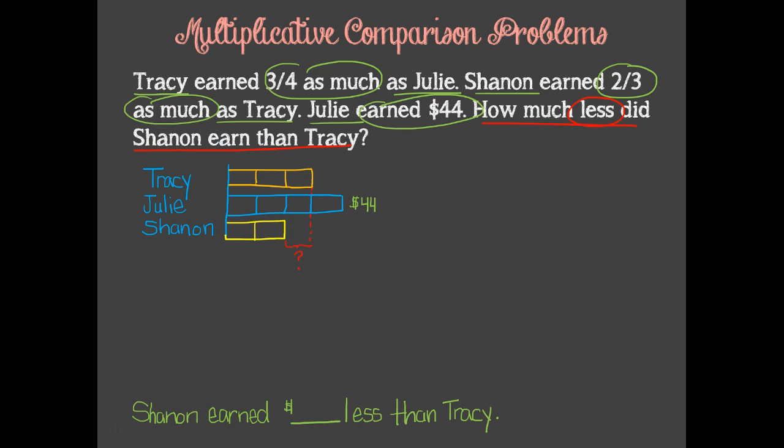That's this little piece right here. Did you remember to place your question mark? Did you reason that if 4 units equals 44, then 1 unit equals 44 divided by 4, which equals 11? Did you find that Shannon earned $11 less than Tracy? Does your model look different than mine? It's okay if you didn't approach the problem the same way I did. The best way to solve any problem is the way that's best for you and that makes sense to you. As long as we get the same answer, or at least the right answer, and we can justify our answer and the work that backs it up, then it's good math.